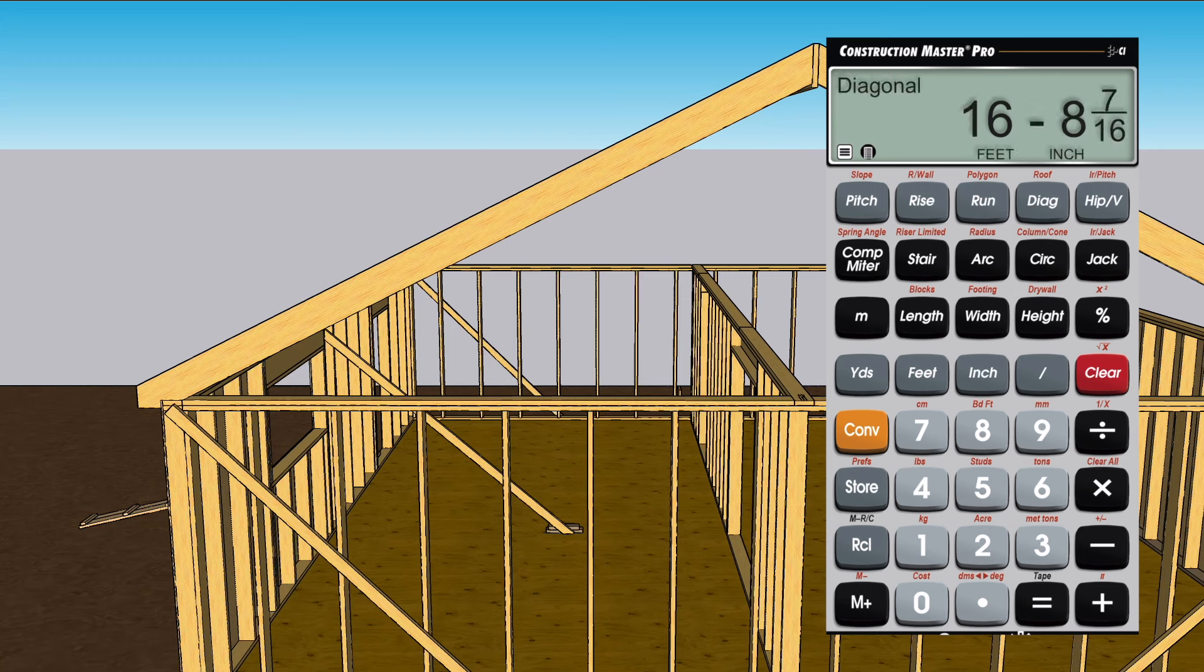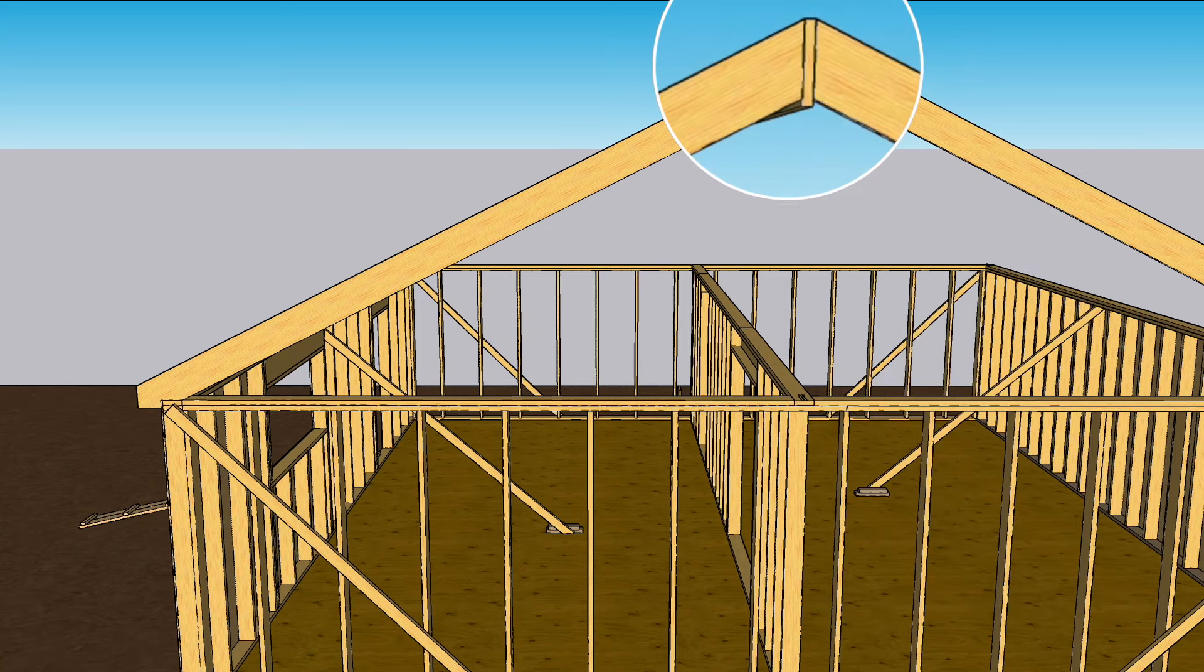Pressing diagonal gives us the rafter length, excluding the rafter tail. So 16 feet, 8 and 7 sixteenths inches is the length from the plumb cut to the plumb cut, from the ridge to the outside wall along the diagonal.